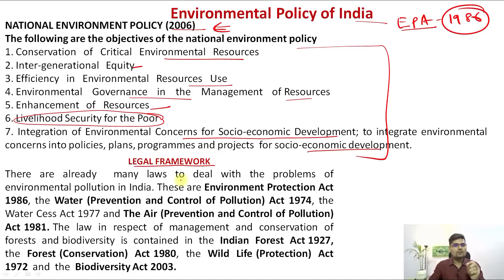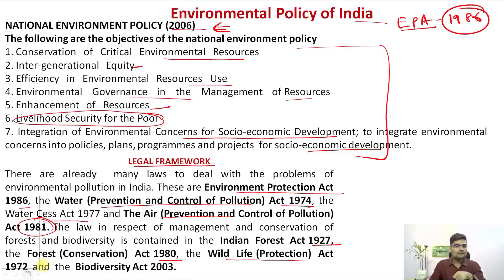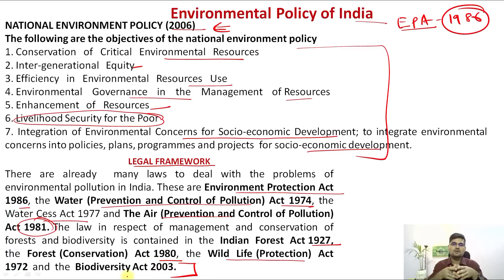India's legal framework for environmental policy includes: the Environmental Protection Act 1986, Water Prevention and Control of Pollution Act 1974, Water Cess Act 1977, Air Prevention and Control of Pollution Act 1981, Law on Management and Conservation of Forests and Biodiversity from 1927 and reviewed in 1980, Wildlife Protection Act 1972, and the Biodiversity Act 2003. These are the legal frameworks governing environmental degradation and pollution issues.